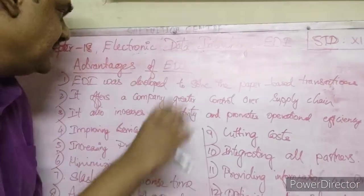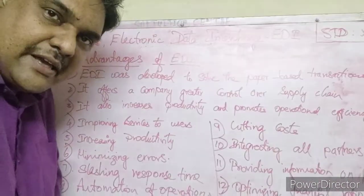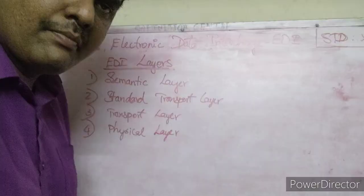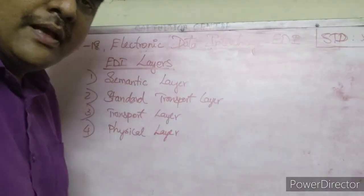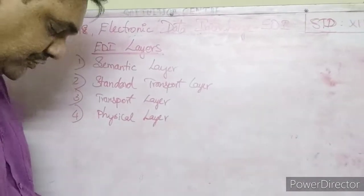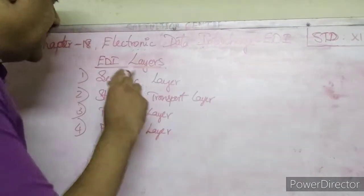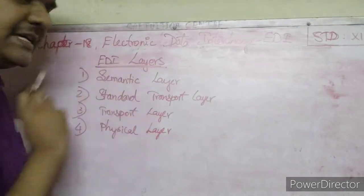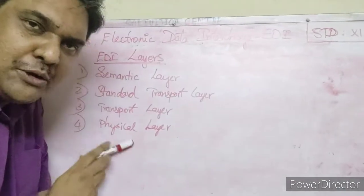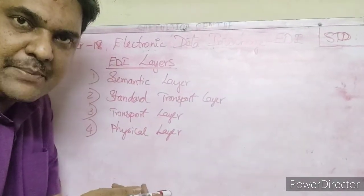So these are the advantages of EDI. Thank you children. The next topic we are going to see in this chapter is EDI Layers, which is again a very important two-marks or three-marks question.